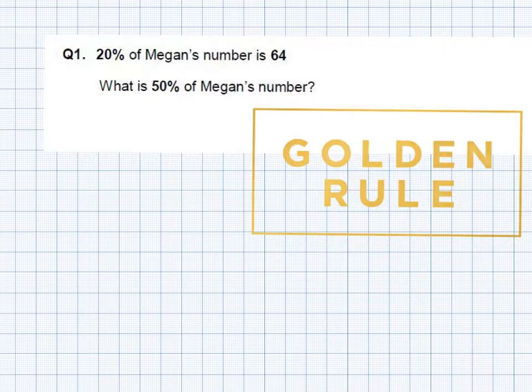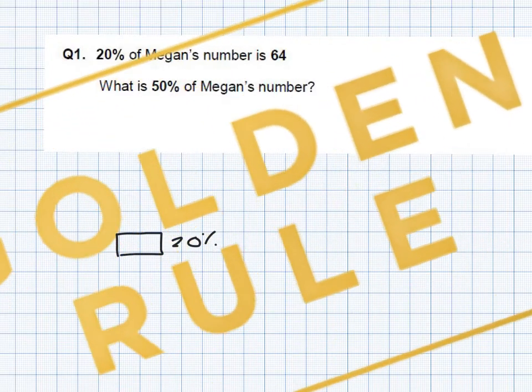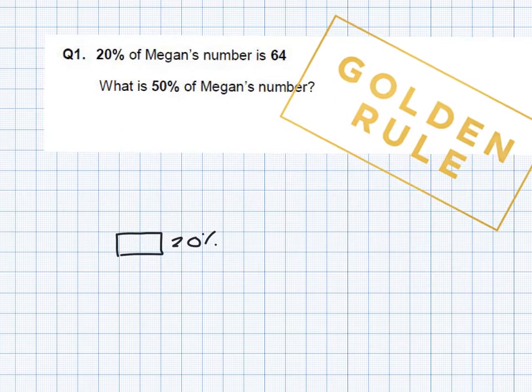So we have got 20% of Megan's number is 64. So I'm going to draw a little block here. This block represents 20% of her number. What is 50% of Megan's number? Well the first thing we need to do is follow the golden rule and find 10% first.